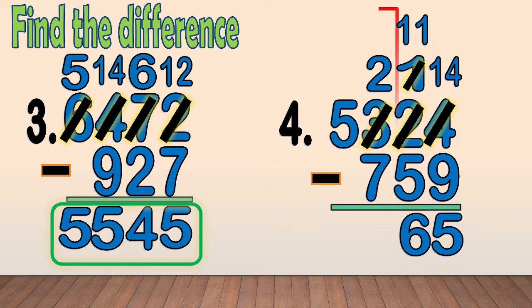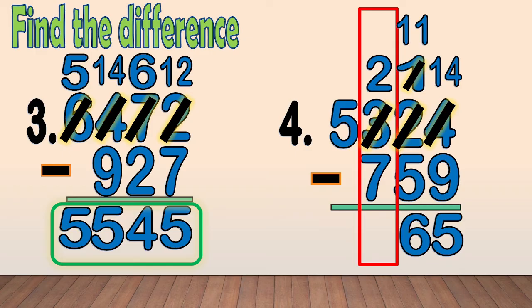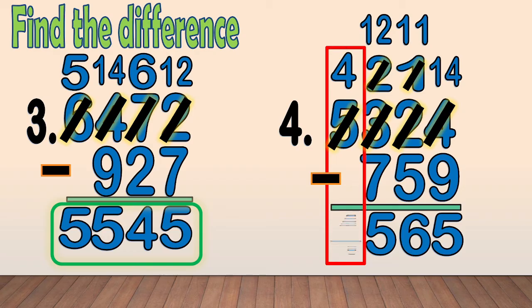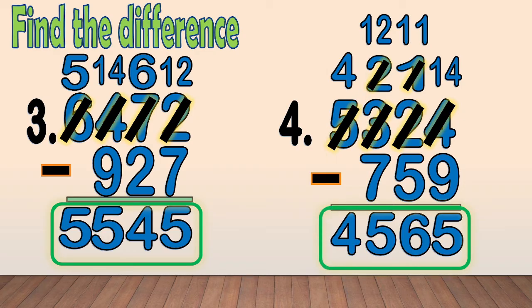Now, we subtract the hundreds: 2 minus 7. We cannot subtract 7 from 2, so we regroup 1,000 from 5. Now we have 12 hundreds. We cross out the 2 and write 12 as new hundreds. We subtract the hundreds: 12 minus 7 equals 5. And bring down the thousands digit 4. Our final answer is 4,565.